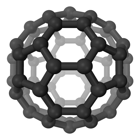A carbodiimide, or methanediamine, is a functional group consisting of the formula RN=C=NR. Carbodiimides hydrolyze to form ureas, which makes them uncommon in nature. From the perspective of small molecule activation, carbodiimides are isoelectronic with carbon dioxide.